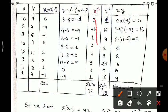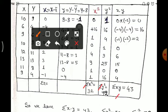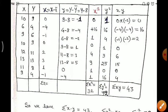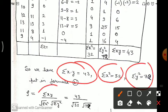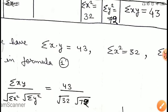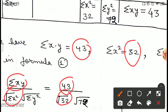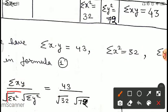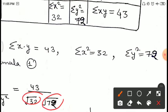Now we substitute all these values into our formula. Summation XY equals 43, summation X-square equals 32, summation Y-square equals 72. So rho equals 43 divided by the square root of 32 times 72. Remember there is a square root sign in the denominator. Now we find the values of root 32 and root 72 using LCM factorization.